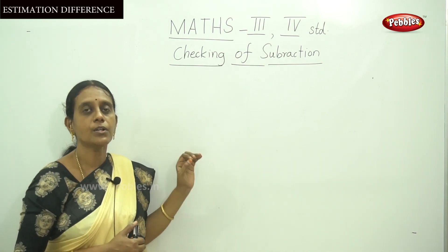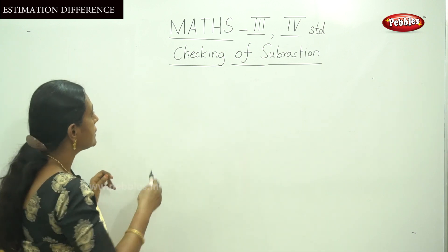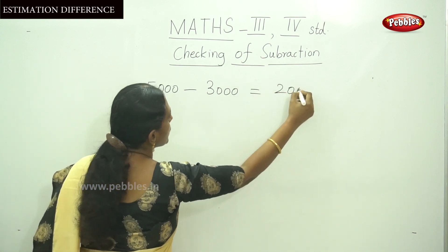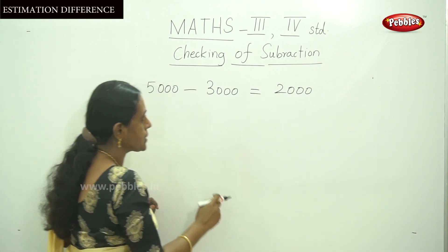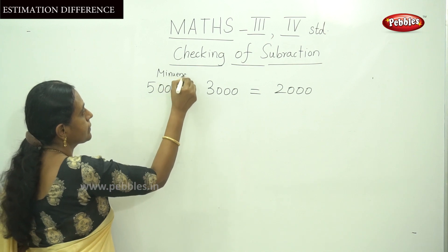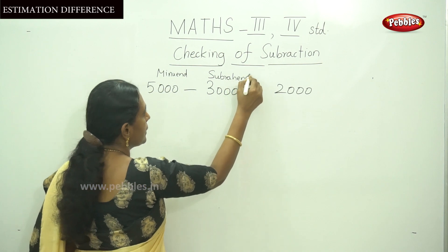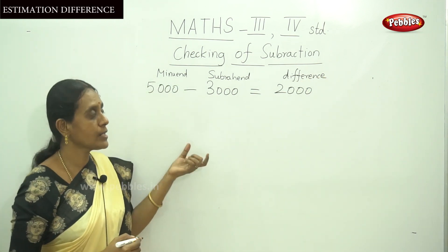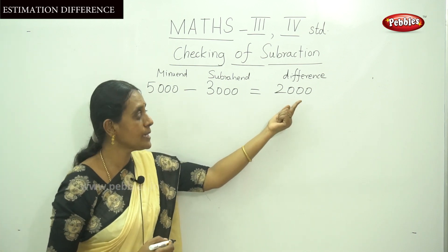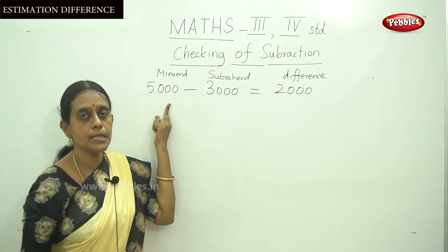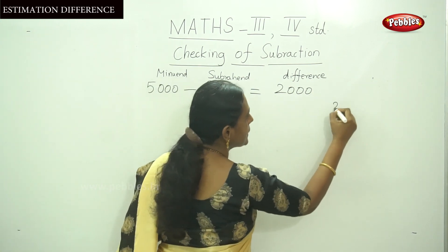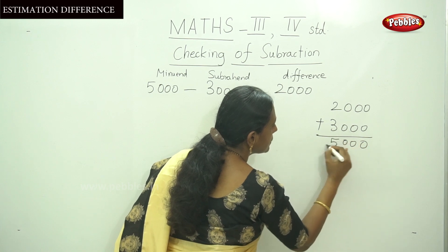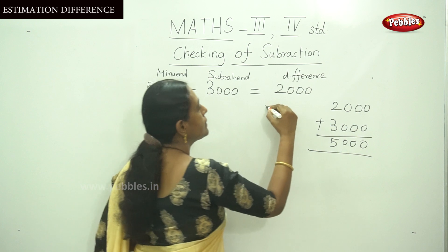Let me explain with an example. Here: 5000 minus 3000 equals 2000. So 5000 is the minuend, 3000 is the subtrahend, and 2000 is the difference. To check whether the answer is correct, add the difference and the subtrahend: 2000 plus 3000 equals 5000. You get the minuend, so the subtraction sum is correct.